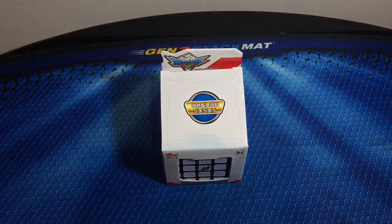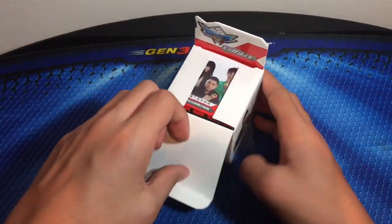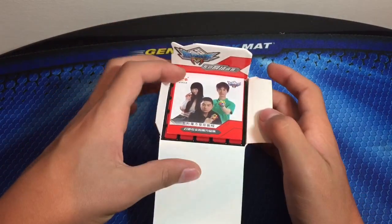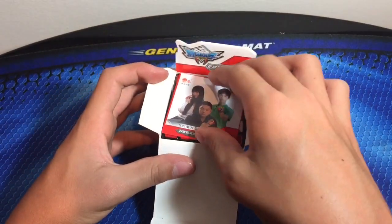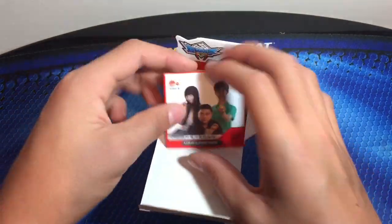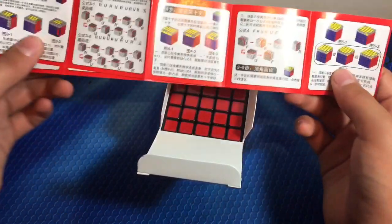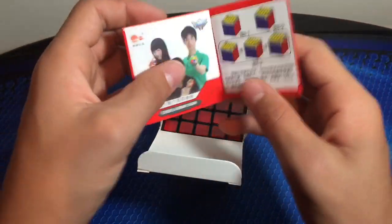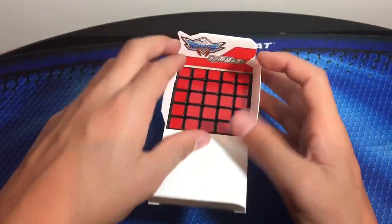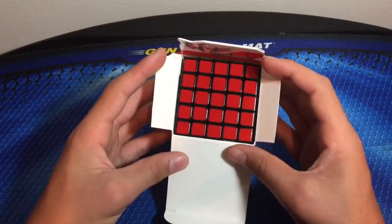After many minutes of struggle, I have actually opened the box! So let's see, we have a pamphlet here. I have no Cyclone Boys cubes at all, I've just realized. I don't have any Cyclone Boys cubes. So let's get that out of the way, and here we have the 5x5.